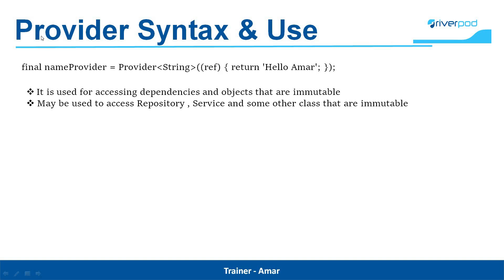This RiverPod Provider is used for accessing dependencies and objects that are immutable — this means the state of the object doesn't change. It can be used to access repositories, services, and other classes that are immutable. The bottom line is that we use this RiverPod Provider if the object is immutable.